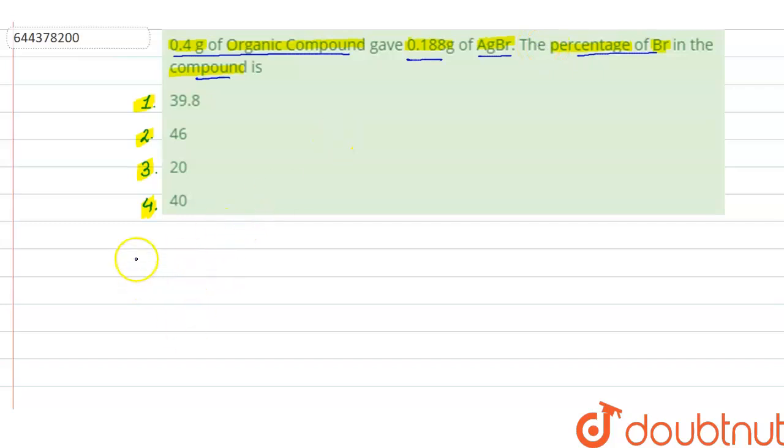So we have AgBr, silver bromide. The molecular mass of AgBr will be equal to - we have silver with atomic mass of 108 gram and we have one bromine, so atomic mass of bromine is 80 gram. So it comes out to be 188 gram per mole. So this is the molecular mass of AgBr.